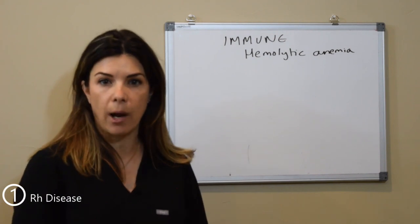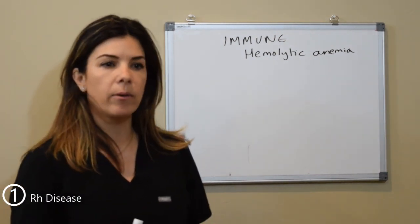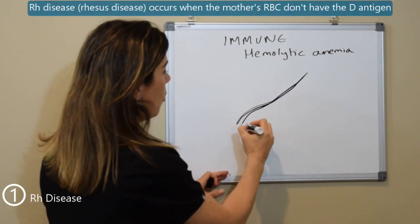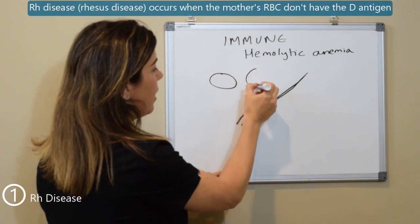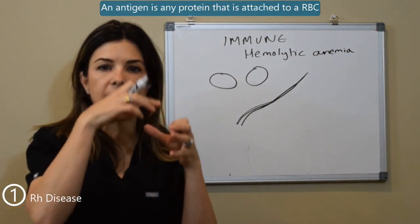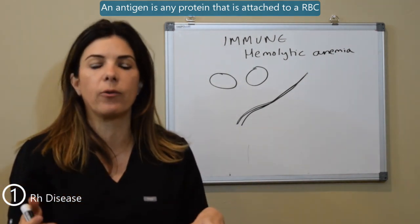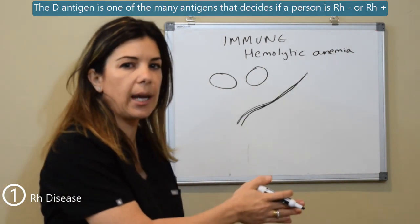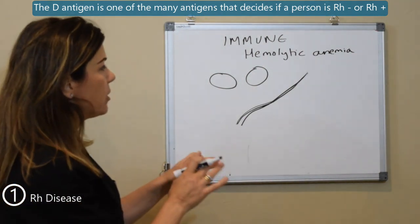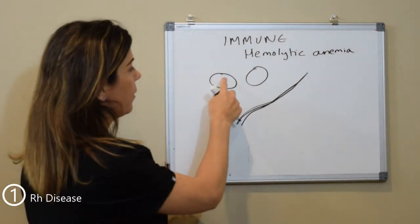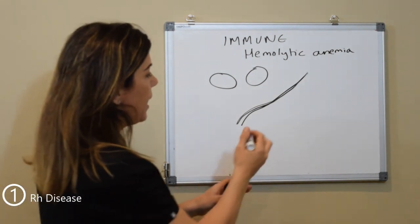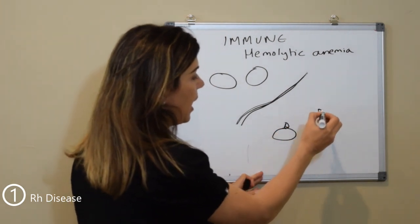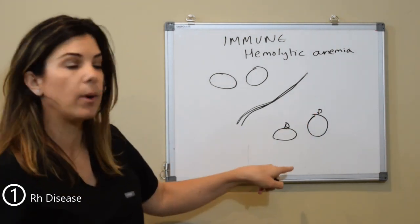Rh disease happens when the mother's red blood cells don't have the D antigen. An antigen is just any protein sticking on a red blood cell — we all have different antigens on our cells, many of them inherited. The D antigen is one of the many antigens that decides whether somebody is Rh negative or Rh positive. So let's assume this mother is Rh negative, or D negative. Now say we have a baby that is Rh positive — we know that because there is a D antigen sitting on the red blood cell.